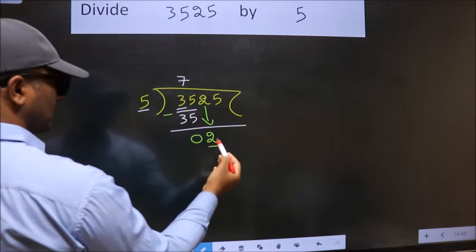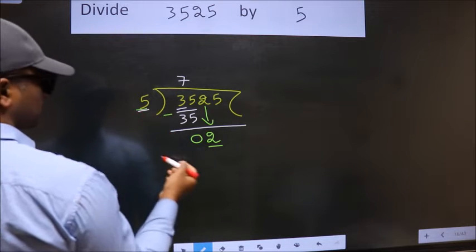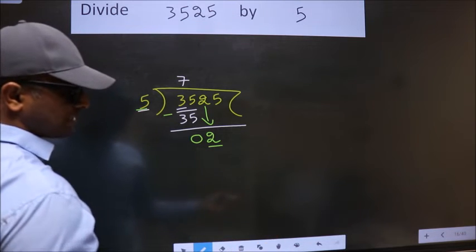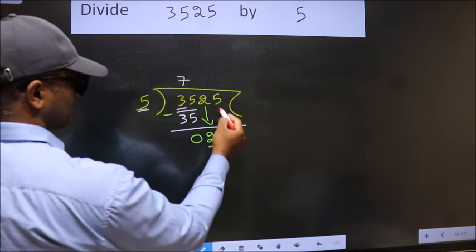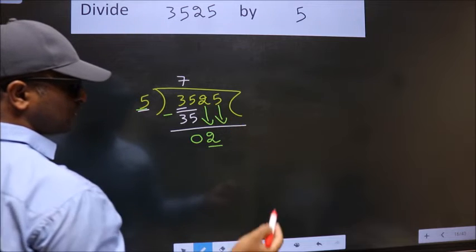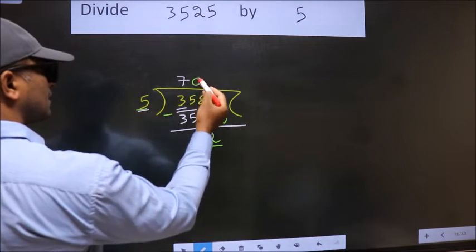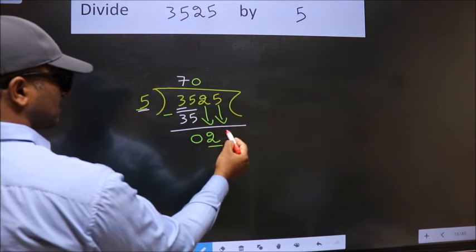Now, here we have 2, here 5. 2 is smaller than 5. So, we should bring down the second number. And the rule to bring down second number is put 0 here. Then only we can bring down this number.